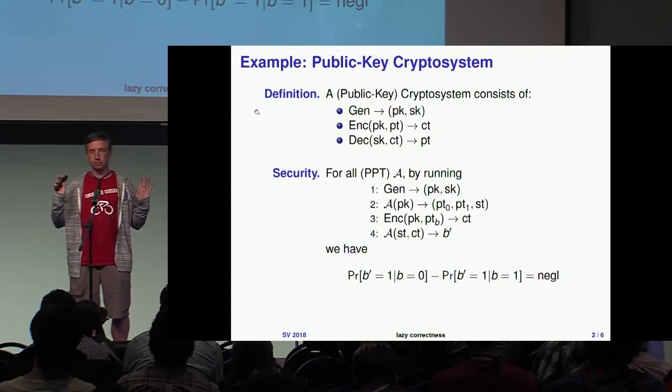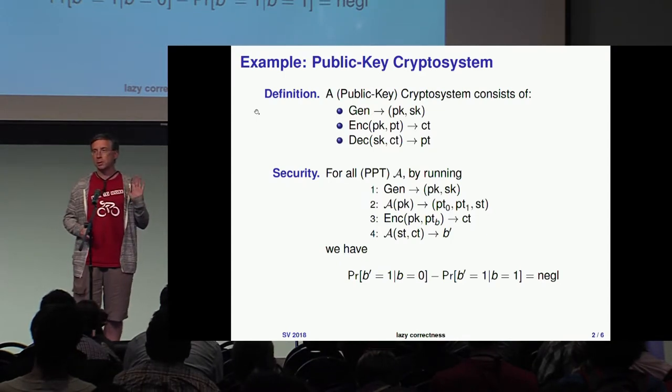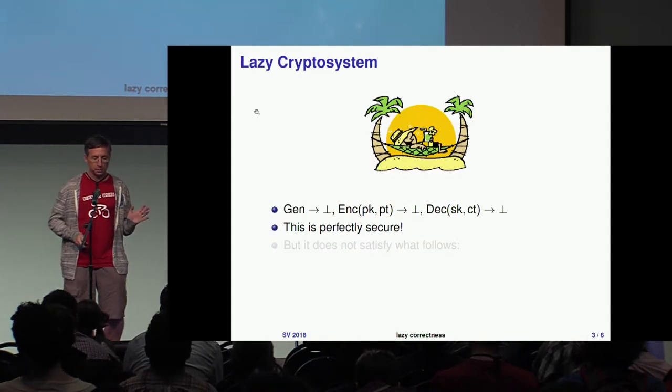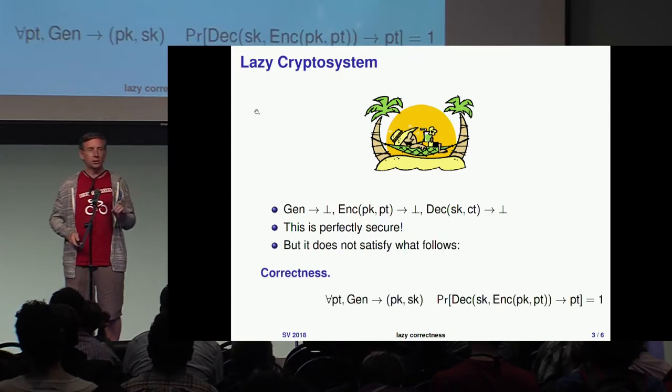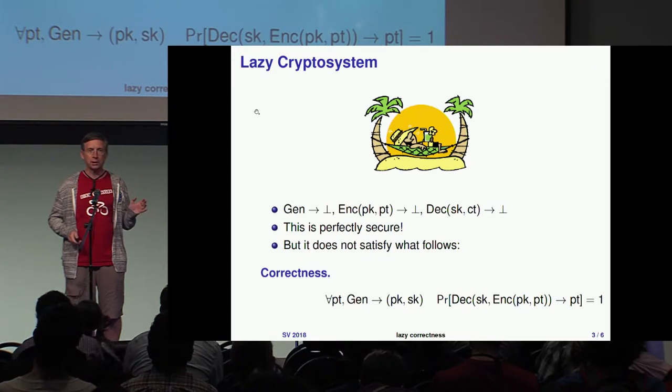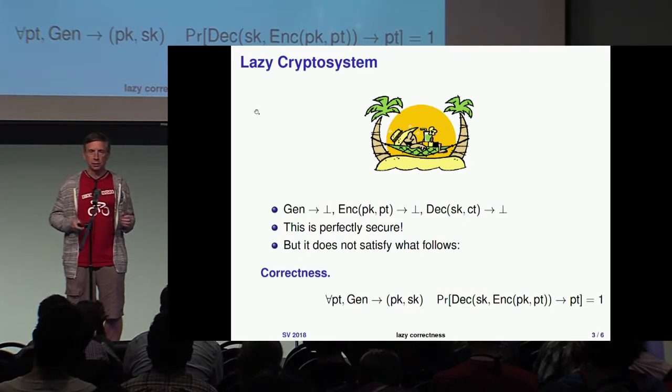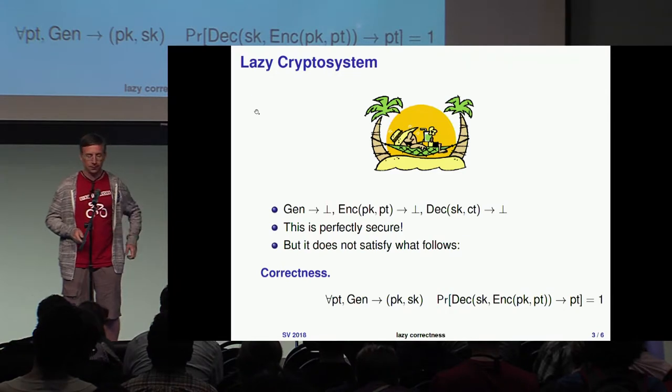It satisfies the requirements—you have three algorithms, it's perfectly secure. But there's something missing: correctness. That's why we have a definition for correctness. Correctness describes what job is to be done—the job of the primitive.